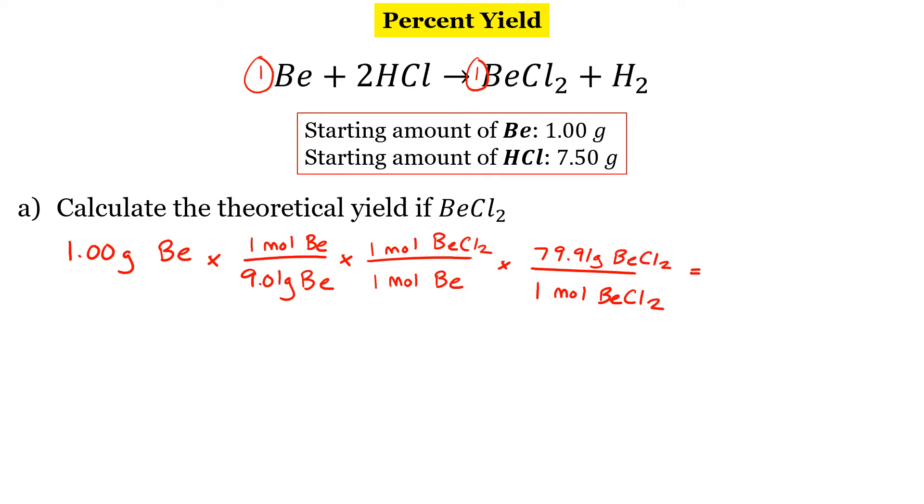So my grams of beryllium will cancel, my moles of beryllium will cancel, and my moles of products will cancel. So I get an answer of 8.87. I'm already taking care of sig figs here.